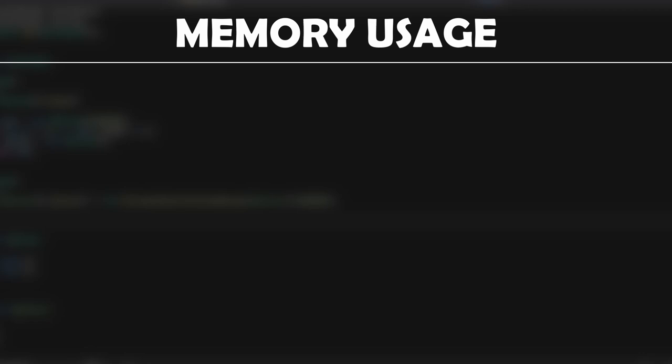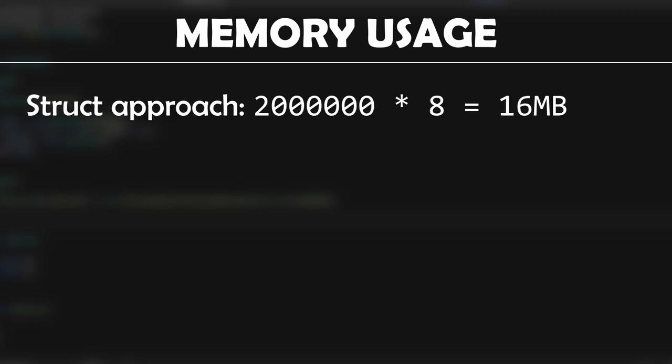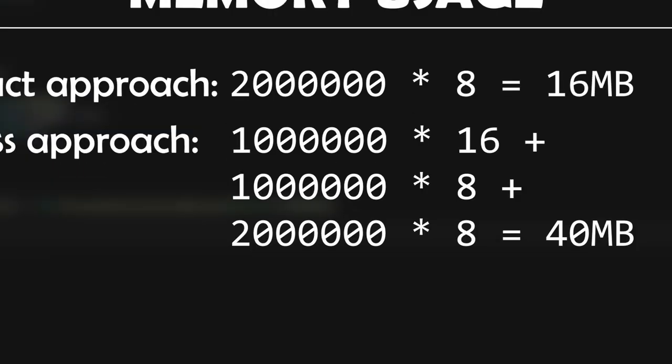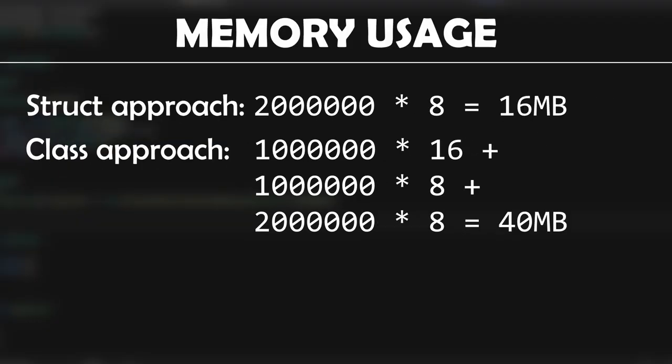Let's just land the finishing blow to classes already, and then we'll talk about why they exist — memory usage. In the struct approach, we have 2 million longs, so ignoring our negligible array overhead, we're sitting at about 16 megabytes in memory. Let's see what the class approach has done: we have a million object headers, a million references, and 2 million longs — that's 40 megabytes of memory. It doesn't sound awful, and it's not terrible, but all these things combined and it really doesn't look good, does it? Which kind of begs the question: why do reference types even exist?